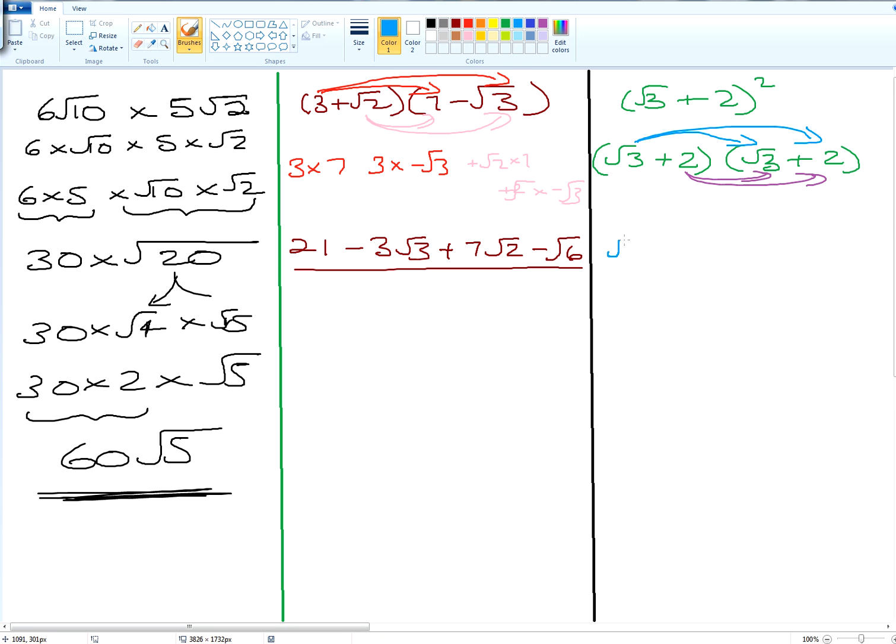So we have root 3 times by root 3, and then we have root 3 times by plus 2. What do we have next? We have plus 2 times by root 3. So root 3 times by root 3 will give us 3. Root 3 times by 2 will give us plus 2 root 3, and then add another 2 root 3. And 2 times by 2 is plus 4.